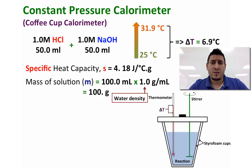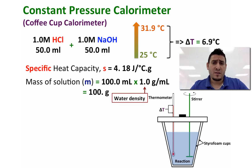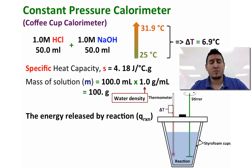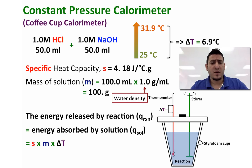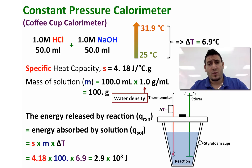Now we have the specific heat capacity, the mass, and the change in temperature, so we can calculate the heat. The heat released by the reaction equals the heat absorbed by the solution: specific heat capacity times mass times delta T. Doing the math, the heat equals 2.9 times 10 to the power 3 joules.